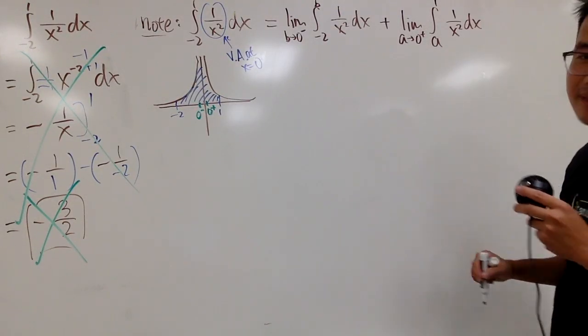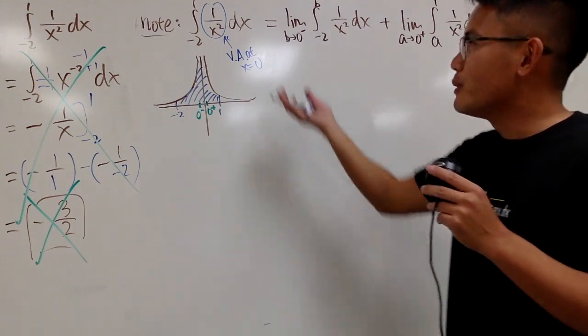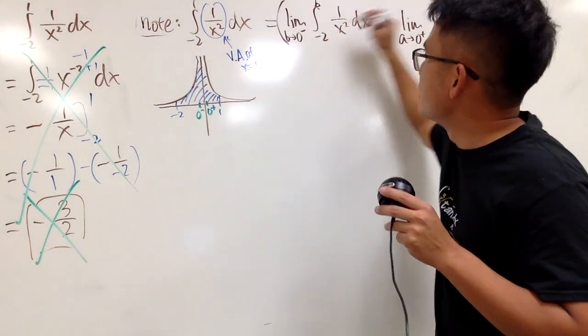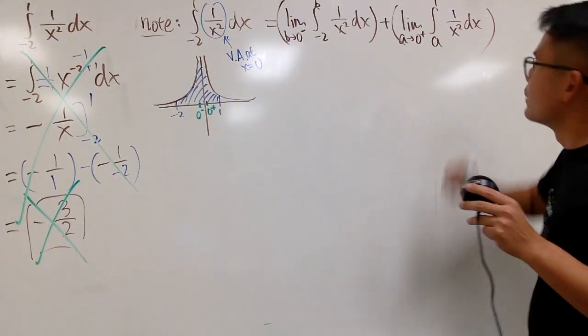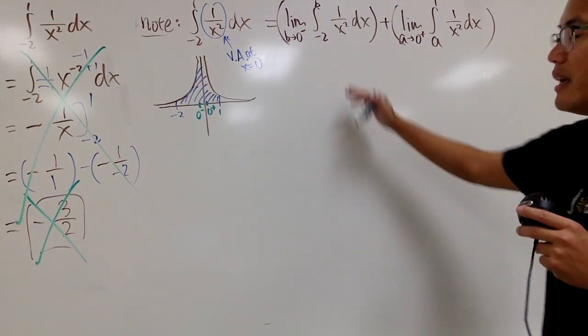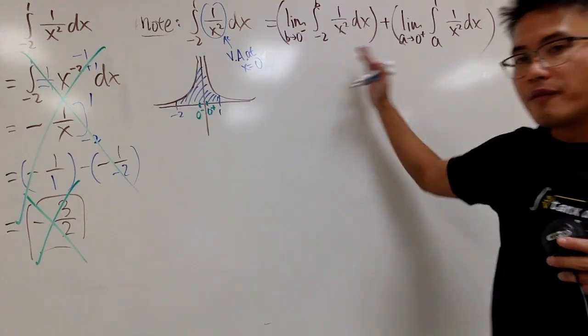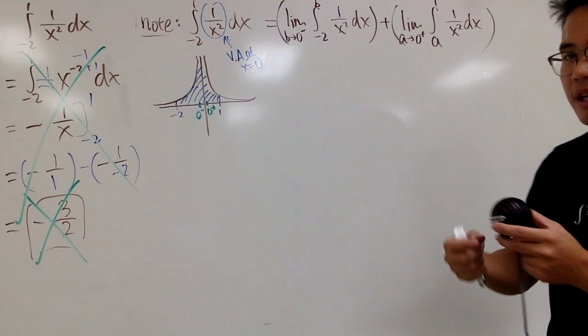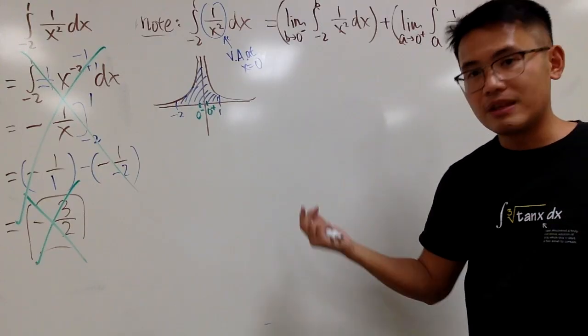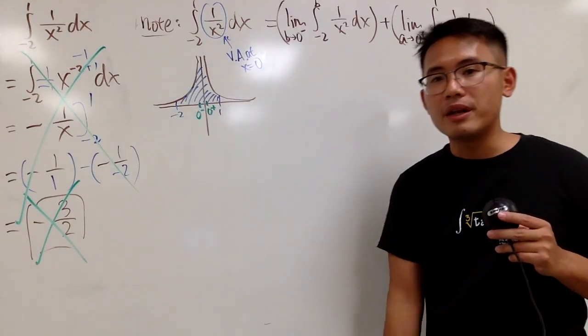And now, you pretty much have this integral. And you have two limit questions right here. And here is the deal. If both of them converges. Then, of course, in the end, you add up their finite value. That's it. That would be the answer for that improper integral.